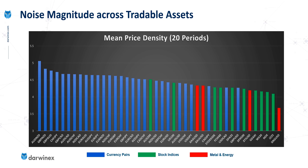So we have the noise measurements here for 42 assets: 28 forex pairs, 10 stock indices, and four commodities — gold, silver, oil, and gas. I used 20 periods for the price density indicator, looking at a rolling average over 2,000 bars, and I've concentrated here on the H1 time frame. For the price density calculation, the higher the value, the higher the noise. The assets on the left-hand side are the most noisy, and those on the right-hand side experience lower levels of noise. I've color-coded these: blue bars represent currency pairs, green bars are stock indices, and red are the commodities.